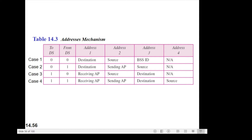Based on this table, we have four possible cases. The first one: To DS is 0, From DS is 0. This means the frame is not going to a distribution system and it is not coming from a distribution system. So the frame is going from one station in a BSS to another. The acknowledgement frame should be sent to the original sender. The DS here refers to the distribution system we discussed in the ESS architecture.